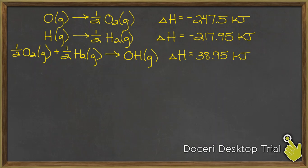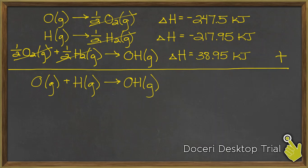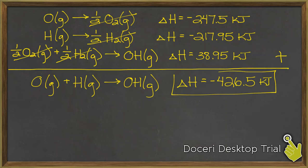Now I've taken care of everything in my overall reaction. Let's add these equations together to make sure we end up with the reaction we're supposed to. After cancellations, I'm left with: O gas plus H gas leads to OH gas — and that matches the overall reaction I was supposed to get. Adding the delta H numbers together gives me my final answer for the overall heat of the reaction.